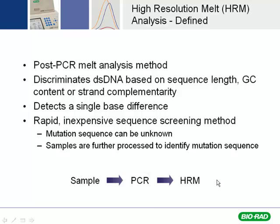Then you do the HRM. The HRM is nothing more than a regular melt curve. The reason why it's called high-resolution melt is because you perform the melt under lower temperature increments. A typical melt curve for specificity is done in 0.5 to 1 degree increments. For HRM, you typically do it down to 0.2 degree temperature increments with a dwell time of about 10 seconds per increment to get really precise temperature increments on your melt curve.